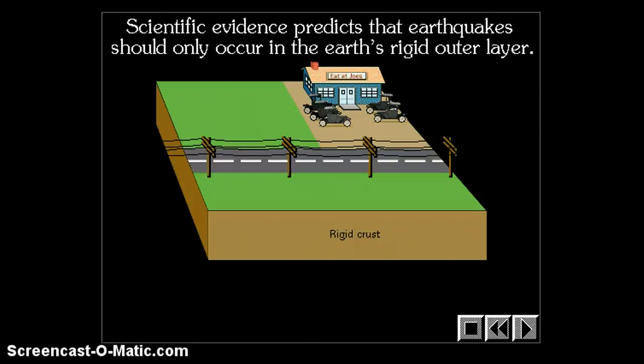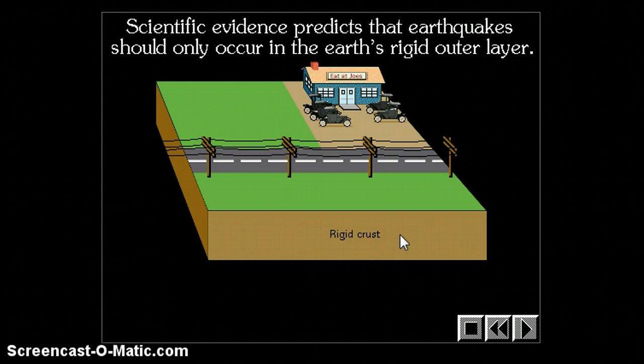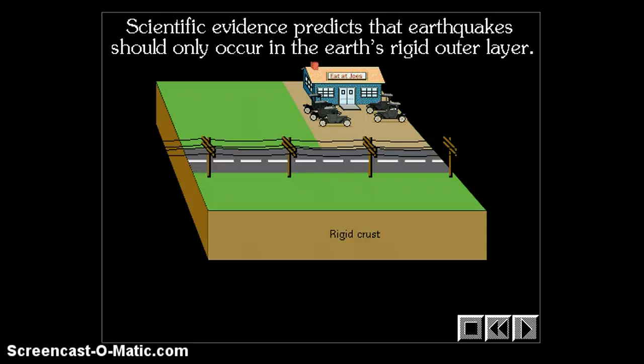Scientific evidence predicts that earthquakes should only occur in the Earth's rigid outer layer. We have a rigid crust connected to the top rigid part of the mantle, which makes up the rigid lithosphere. Something that's rigid is brittle, it's solid. It can stress and strain and eventually break and crack and create an earthquake.